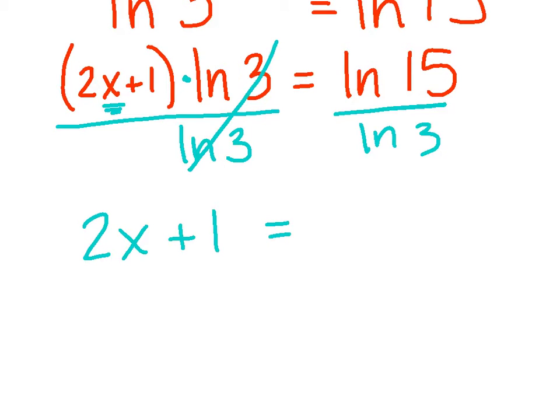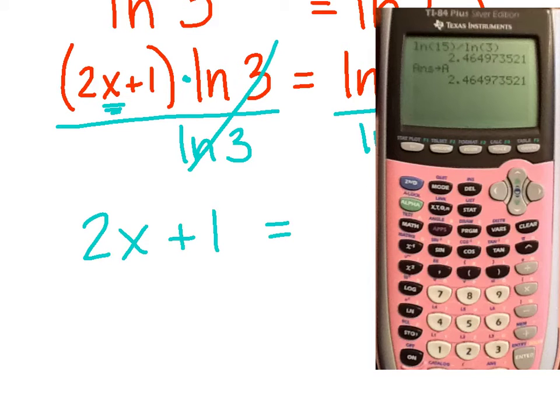And then on this side, I'm just left with the 2x plus 1. Now on this side, again, hopefully that calculator's handy. We're going to do a lot of calculator action here. When you type in the ln of 15 divided by the ln of 3, you're going to get some ugly decimal. I've got 2.46497 blah blah blah. You absolutely cannot round that answer.